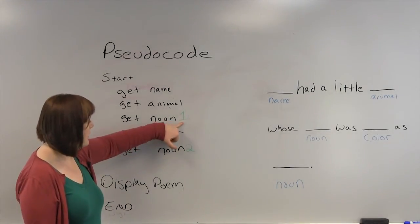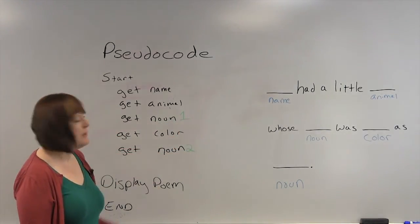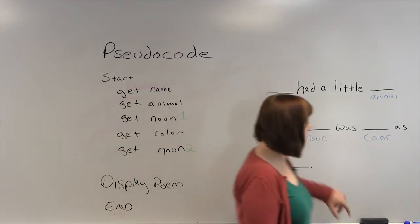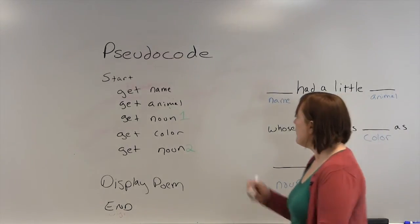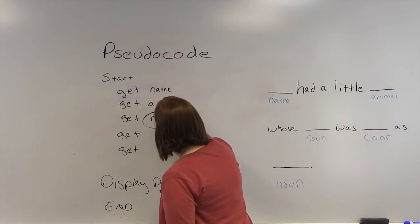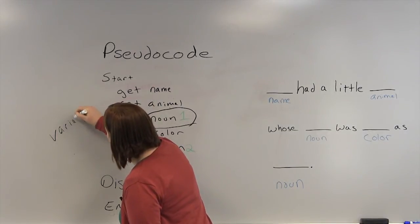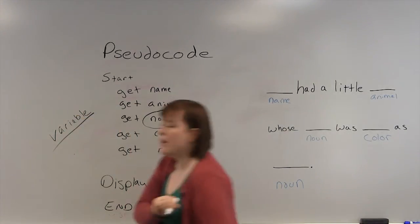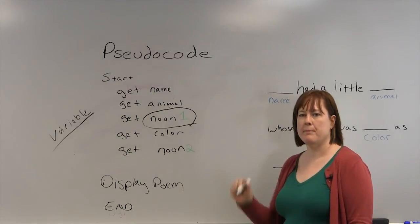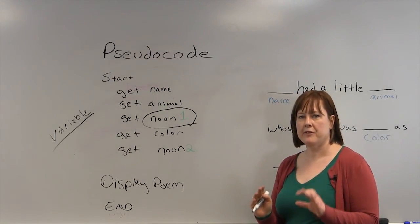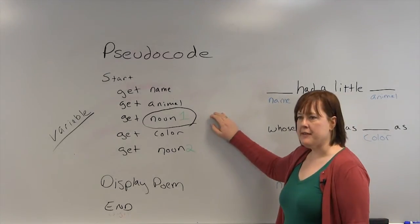You'll notice that in green I have here one and two because the main difference between doing this by hand and doing this for programming is that these will actually be something called a variable. I'm going to talk about that more as we go forward. But basically a variable is a named place in memory where you can store something.